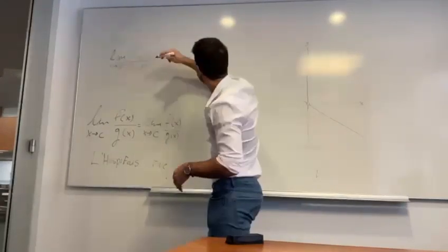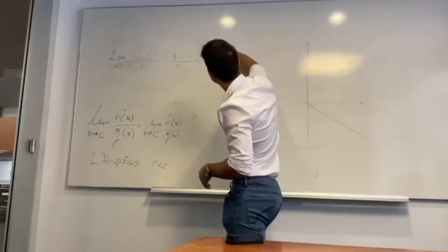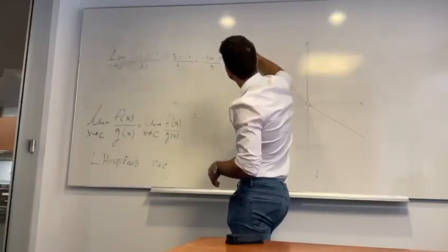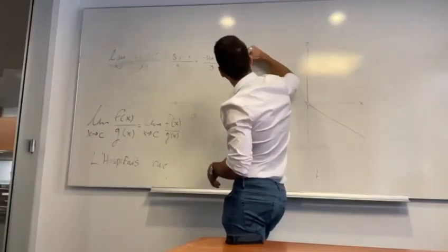And then we're going to plug in 0. It means minus sin of 0 divided by 3, which is equal to 0 divided by 3, which is equal to 0.